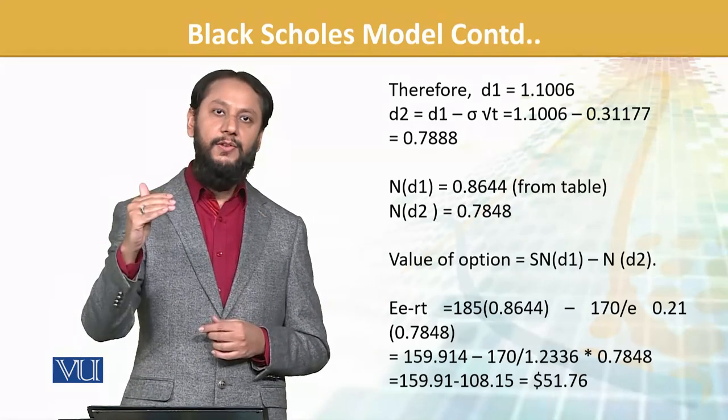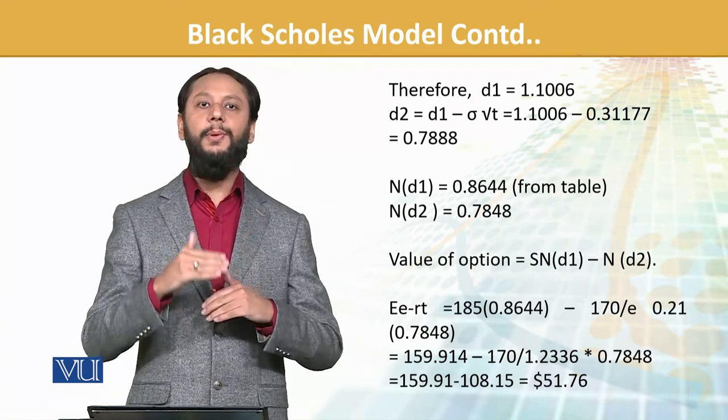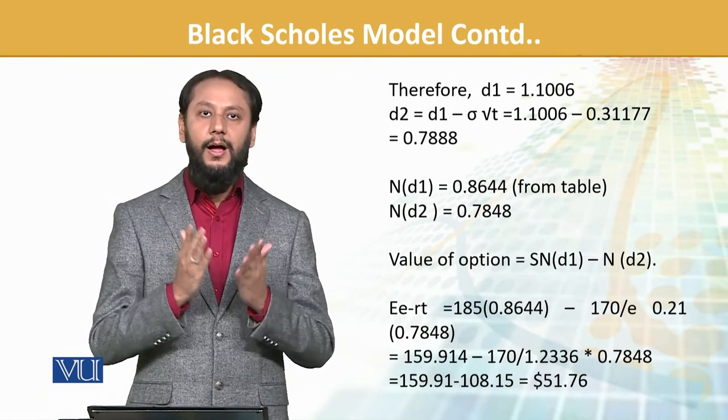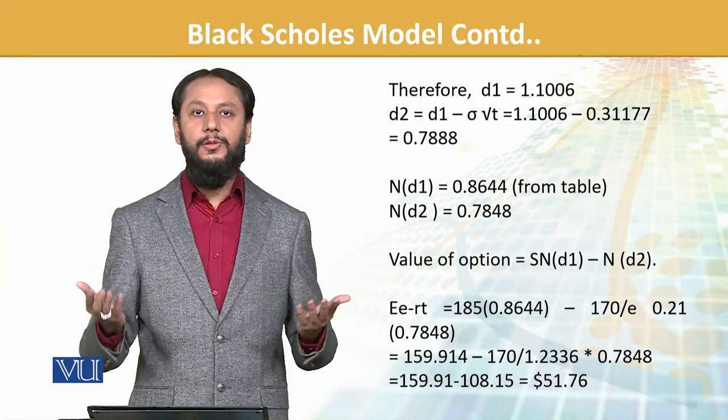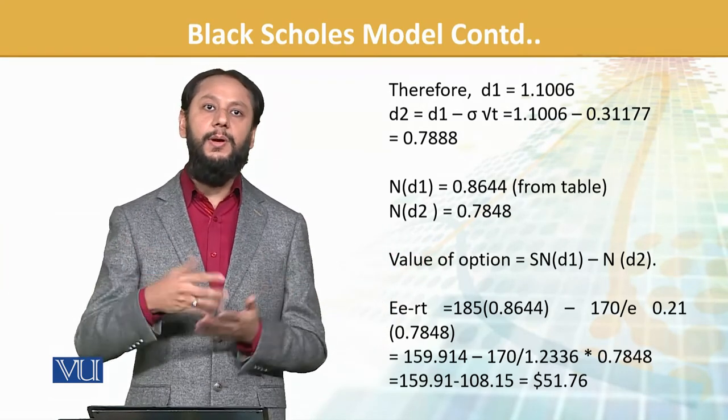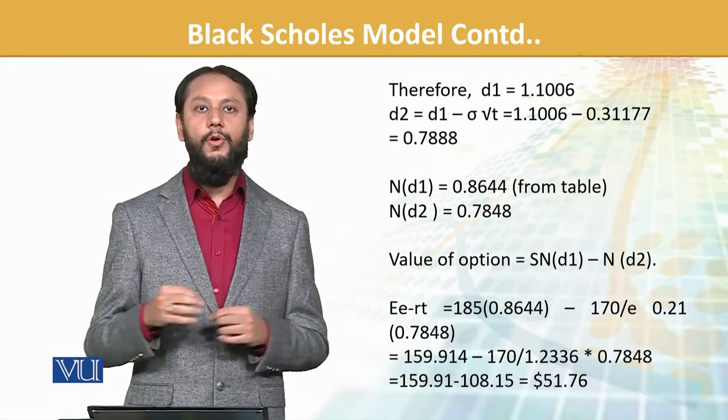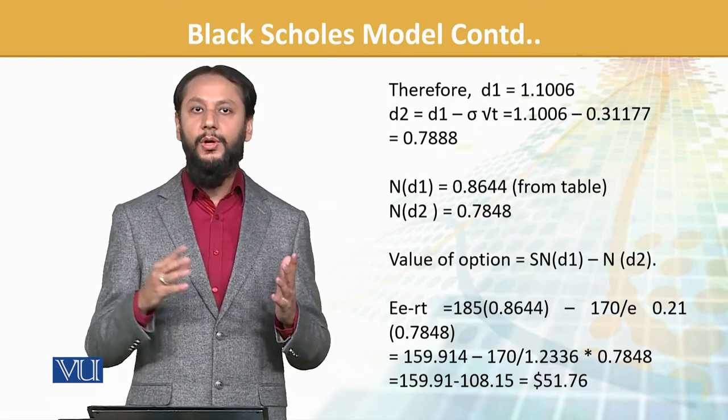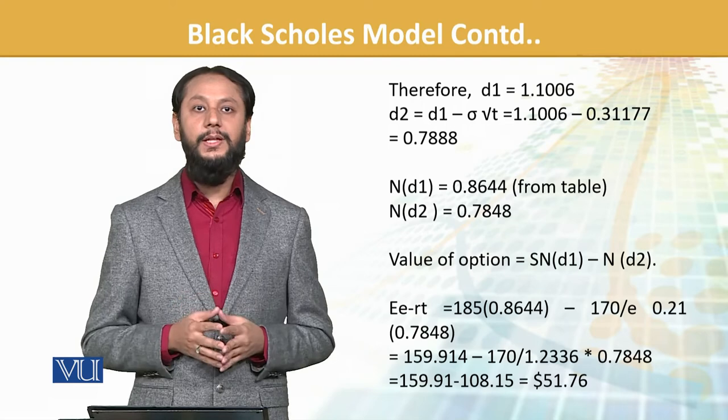Now if we look, the share was 185 and call option strike was 170, so there's a 15 rupee difference. That difference exists now. But we're talking about a long period. When the period is long, it could be that the share price goes to 200 or even 500. Capturing the whole path, the volatility, the time - when we built this in, we get this value that this option should be valued at 51. Now both investor and seller know this, banks know this. Everyone knows this standardized value, so it becomes the market standard. So this is why Black-Scholes is very important.